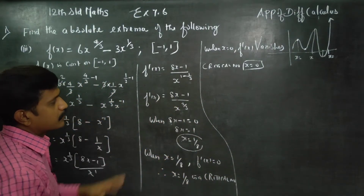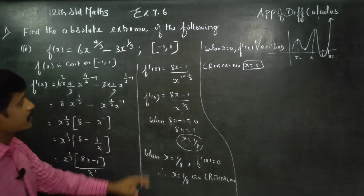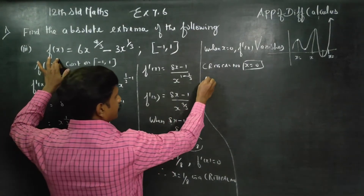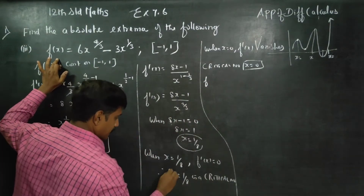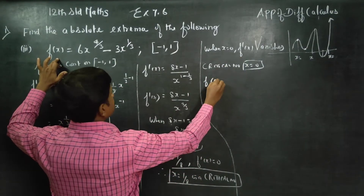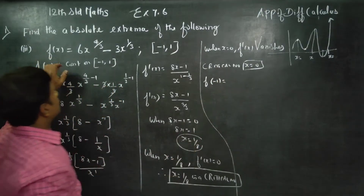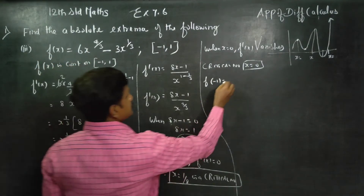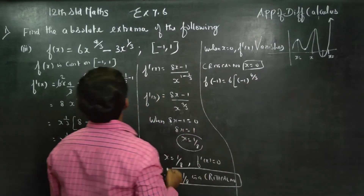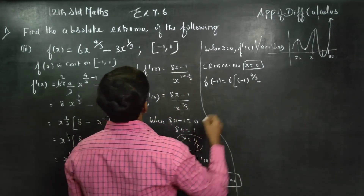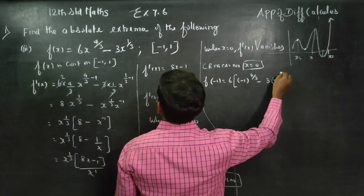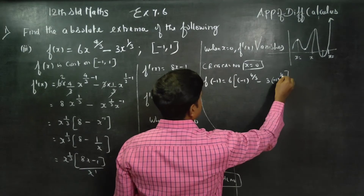After finding the critical numbers, we evaluate f at the critical numbers and at the endpoints. We will compute f(-1), f(0), f(1/8), and f(1). Starting with f(-1): substitute x = -1 into 6 times (-1) power (4/3) minus 3 times (-1) whole power (1/3).